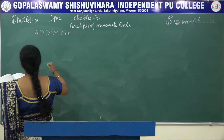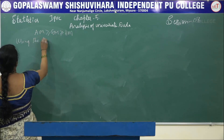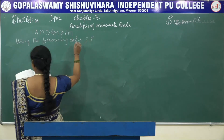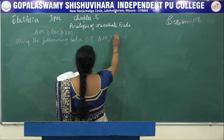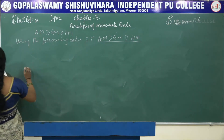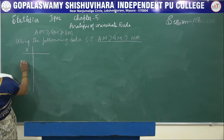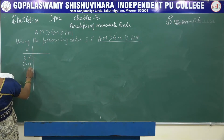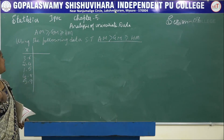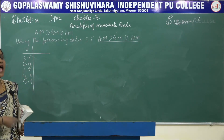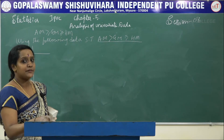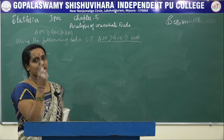Using the following data, show that AM is greater than GM, which is greater than HM. The X values are 3.6, 2.4, 1.5, 4.8, and 5.9. For this data, we have to calculate AM, GM, and HM, and then show that AM is greater than GM and GM is greater than HM.